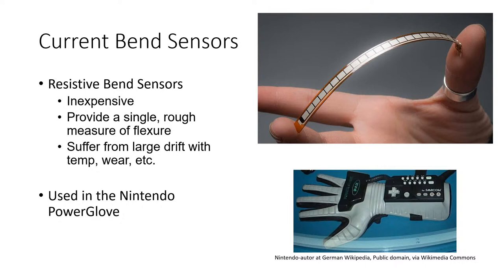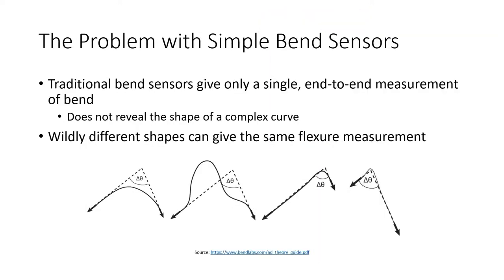Resistive bend sensors are also not very stable — they're temperature-sensitive, change with humidity, and suffer from fatigue. They're not very precise devices, but they've been used extensively to track human motion. The best early example was the Nintendo Power Glove from the 1990s, which had resistive bend sensors in each finger to try to get some idea of how the fingers were moving — but it was a very crude measurement at best.